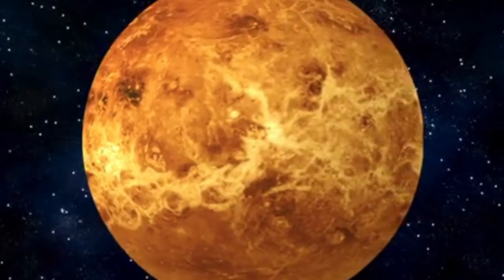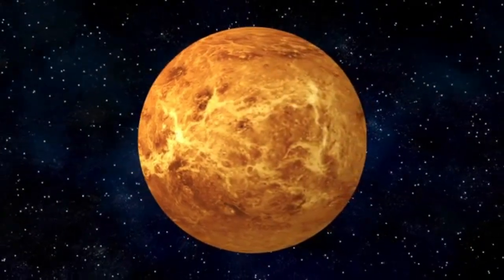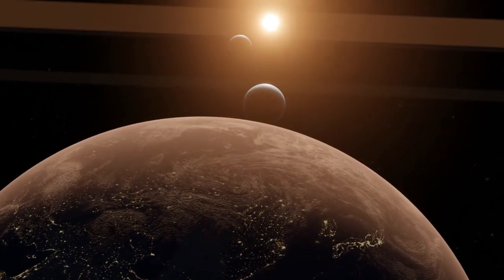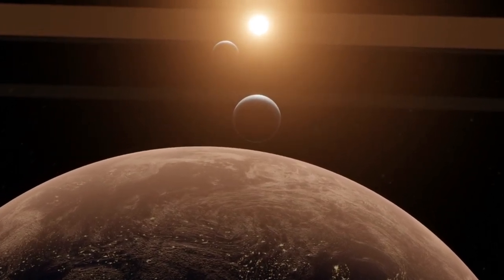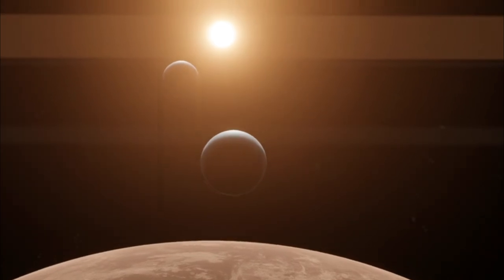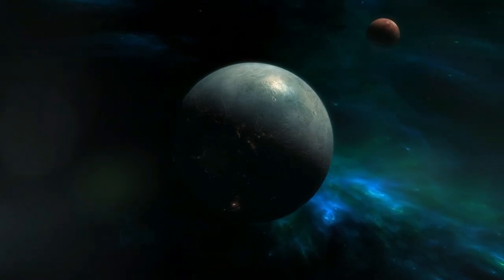The universe never fails to astonish us, and recent revelations from the James Webb Space Telescope have once again underscored the sheer diversity and wonder of exoplanets. With over 5,500 confirmed exoplanets in more than 4,000 planetary systems, it's clear that planetary diversity is the norm rather than the exception.